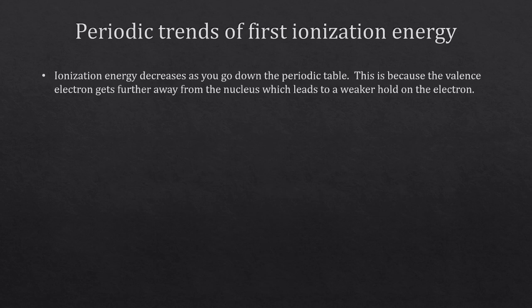What are the periodic trends for first ionization energy? Ionization energy decreases as you go down the periodic table, because the valence electrons get further away from the nucleus and aren't held on to as tightly. Francium at the bottom left barely holds onto its outermost electron — it's so far from the nucleus it can barely feel it.